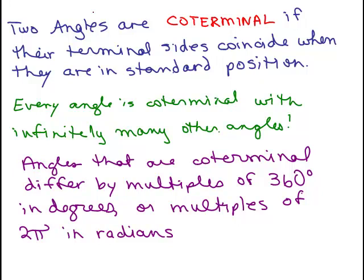Before doing the problems, let's keep in mind what it means for two angles to be coterminal. That happens when their terminal sides coincide when the angles are in standard position. So that means every angle is coterminal with infinitely many angles.